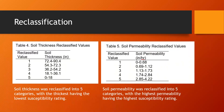Here you see the reclassification for soil thickness and soil permeability. For soil thickness, the thickest soils are classified as one and the thinnest as five. For soil permeability, five is the highest infiltration rate and one is the lowest.